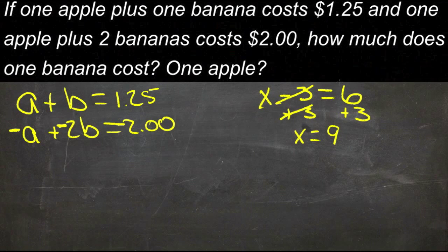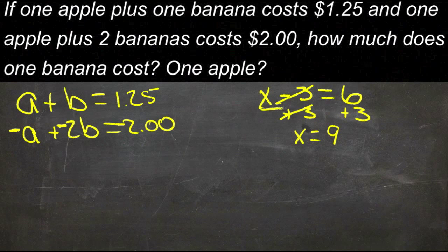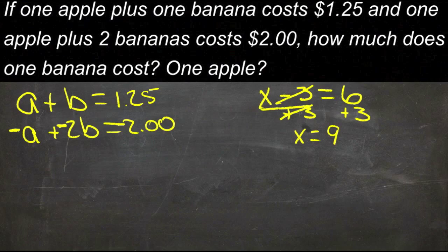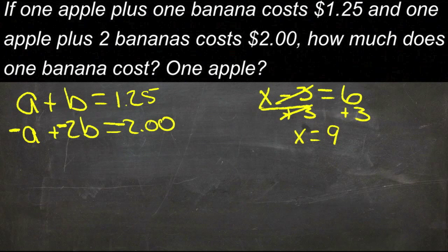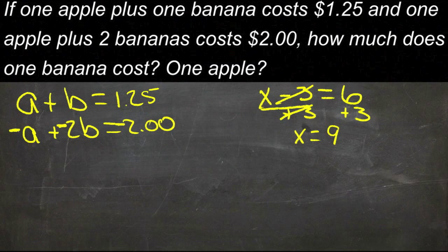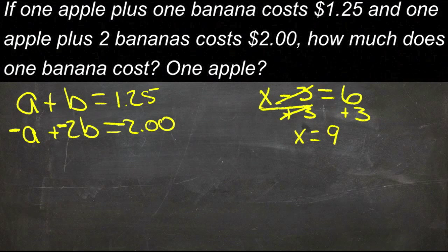And I can do that because the original statement just said that x minus 3 is equal to, or is the same thing as, 6. Then, if I add 3 to both sides, what I'm really saying is that x minus 3 plus 3 is the same thing as 6 plus 3. And if this was true, then this would also be true, because if I add the same thing to both sides of a balance beam, it's going to stay balanced.